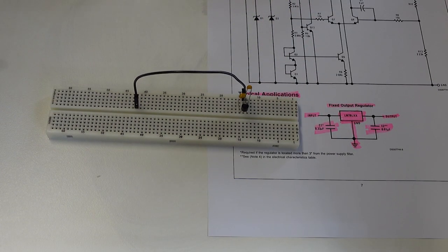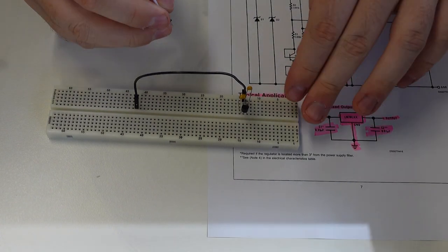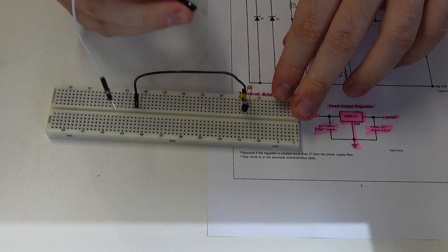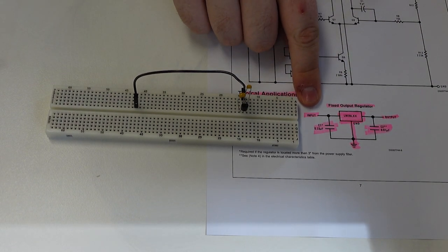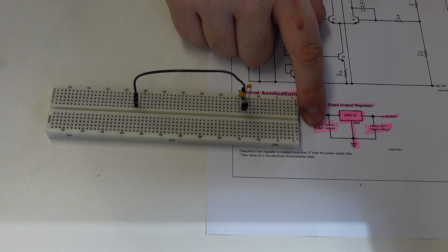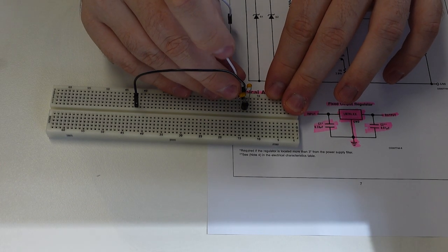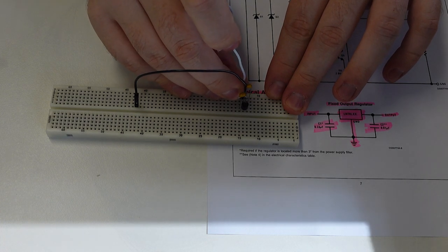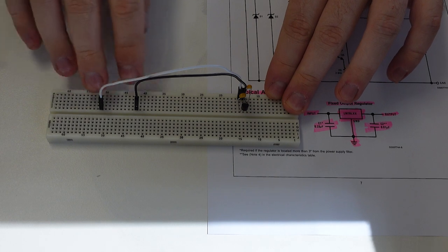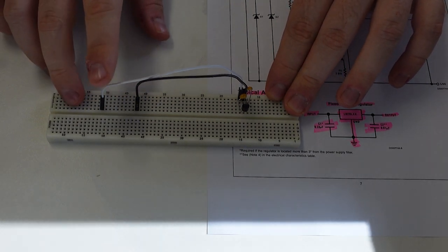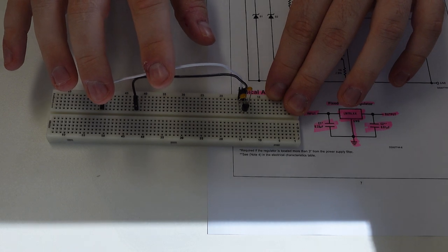The second pin we're going to connect is the input from the 9-volt battery. And that I'm going to use this white lead for. So the input pin connects, as we can see in the diagram here, where it says input, that connects to both the capacitor and the input of the LDO. So we can connect that to the same row that all the others are on. And then that can go down to a separate row, further down the board. So now we know that this pin is the positive voltage from the 9-volt battery, and this pin is the negative voltage from the 9-volt battery.